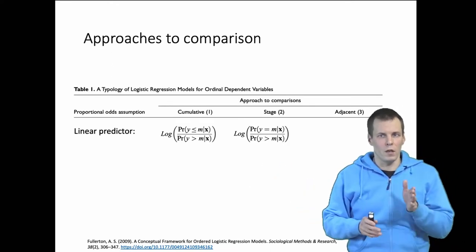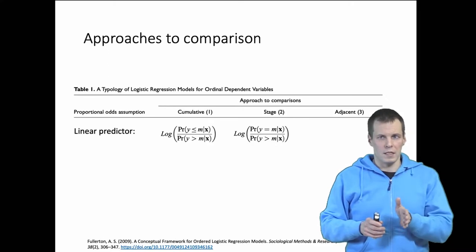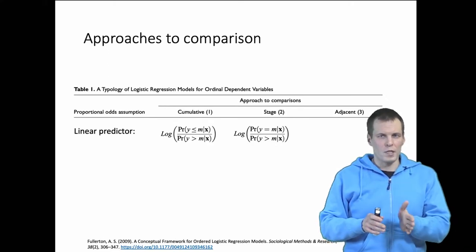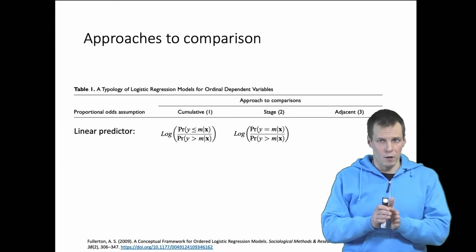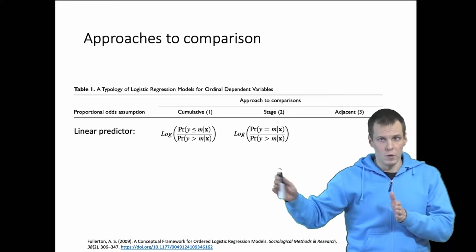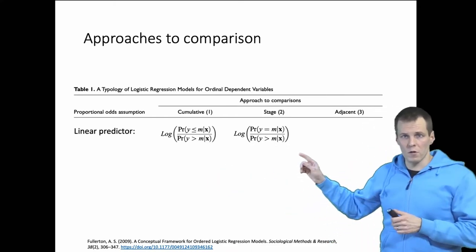For example, given that we know the response is at least two, what are the odds or what's the probability of the response being more than two? These kinds of models are useful when you want to test theories.